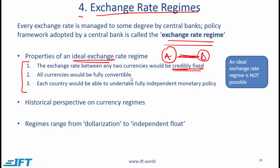All currencies would be fully convertible — you would want to convert any currency into any other currency very easily. And finally, each country would be able to undertake fully independent monetary policy. Clearly these three represent an ideal scenario, but properties one and three cannot happen at the same time. So any currency regime would require some trade-off across this spectrum of different regimes.